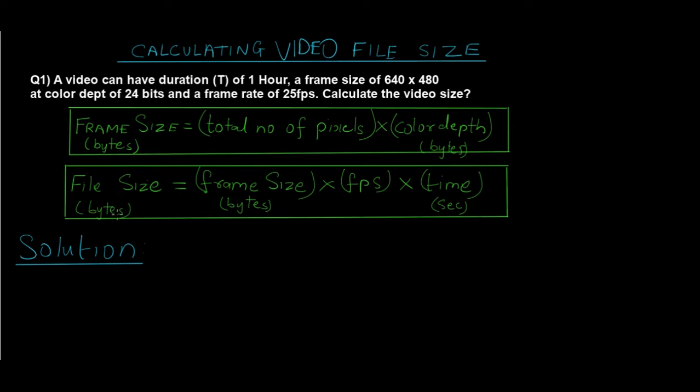First things first, let's calculate the frame size. The frame size is equal to total number of pixels, which is given by 640 multiplied by 480, multiplied by color depth. We've been given the color depth of 24 bits, but we want the color depth in bytes.